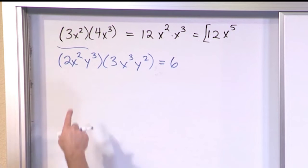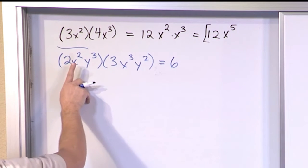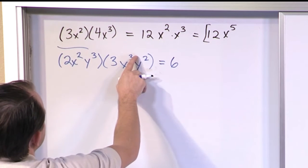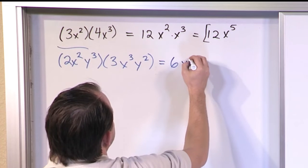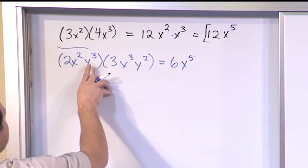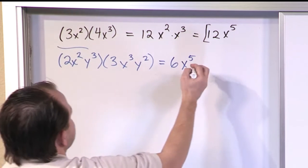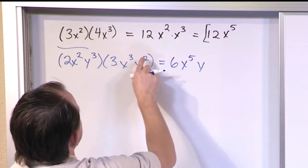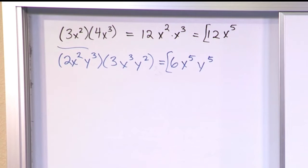And then basically you start multiplying both of these guys times both of these guys. But you'll eventually notice that you'll have x² times x³. They have the same base. So you can just add the exponents. X to the fifth just like before. And then you're also multiplying y³ times y². Same base, so I just add the exponents. 3 plus 2 is 5.